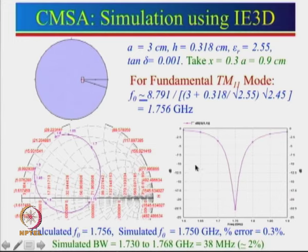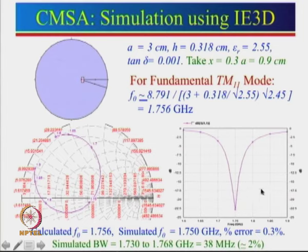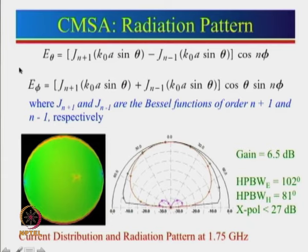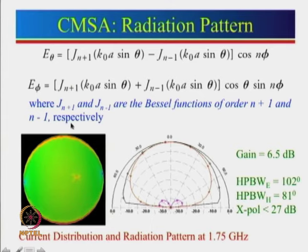The simulated bandwidth, calculated at reflection coefficient = −10 dB (approximately VSWR = 2), is about 2%, which can be verified using the design curves given earlier. The radiation pattern involves Bessel functions Jn+1 and Jn−1 of orders n+1 and n−1 respectively. These computations take time, but one key point: Eφ has an additional cos θ term compared to Eθ.